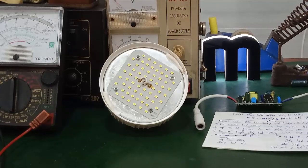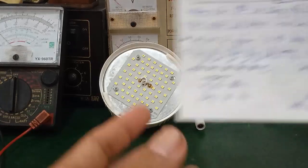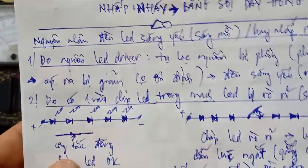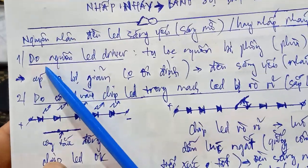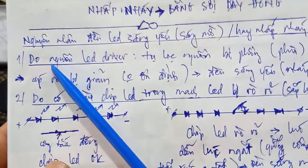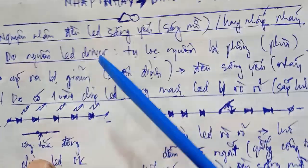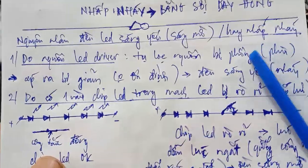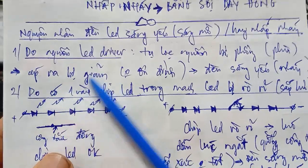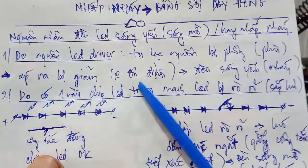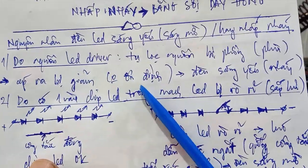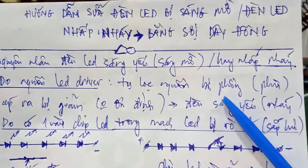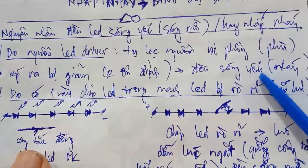Trước tiên mình tìm hiểu về phần lý thuyết. Nguyên nhân do nguồn LED driver: thứ nhất là do tụ lọc nguồn bị phồng, bị phù. Nó sẽ làm giảm điện áp ngõ ra hoặc điện áp ngõ ra không ổn định, làm cho đèn LED bị sáng yếu hoặc nhấp nháy.